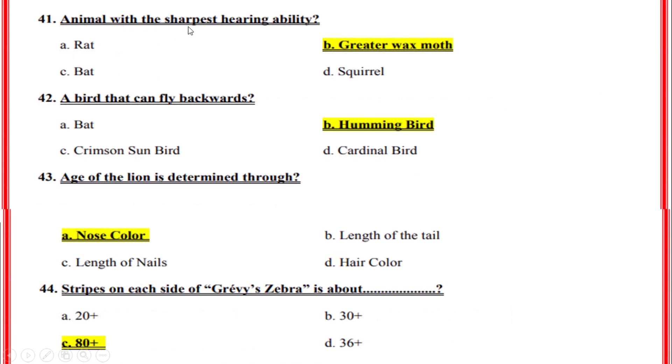Animal with the sharpest hearing ability? Correct option: B, Greater wax moth. A bird that can fly backwards? Correct option: B, Hummingbird.